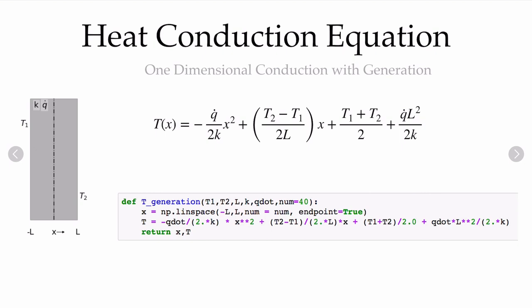Now that we have our temperature distribution, it's straightforward to write a function in Python to explore it. I've written a function called T_generation, which takes the temperature boundary conditions T1 and T2, the half-length L of the material, the constant thermal conductivity k, and the q-dot. It has a default of 40 points, generates the x array over which to plot, directly solves the equation, and returns both the x values and the temperature distribution.